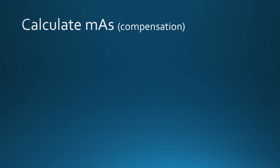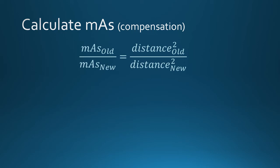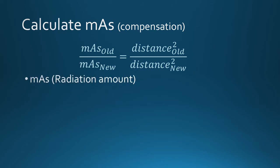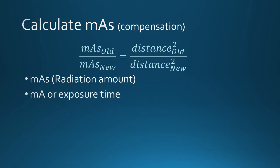There are two versions of the inverse square law equation that are similar and need to be applied correctly. The second is the MAS compensation version. It is very similar to the intensity equation, but there are two important differences. First, MAS is substituted for intensity. MAS indicates the total amount of radiation used to produce a particular exposure, and is equivalent to radiation dose and intensity. For compensation questions, mA or exposure time may be substituted for MAS, since they are directly proportional to MAS and are part of an MAS calculation.